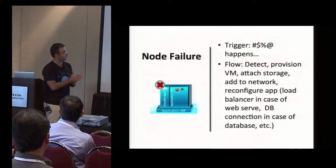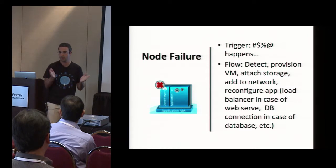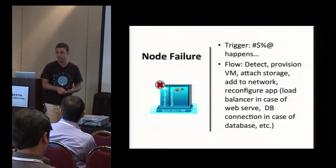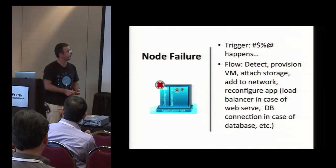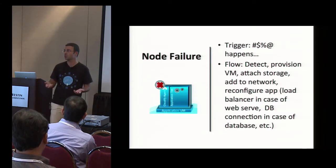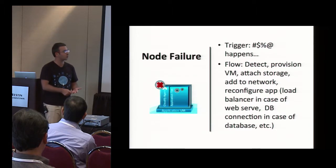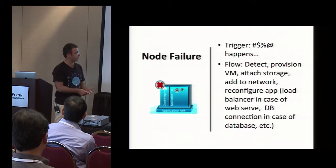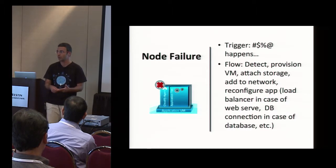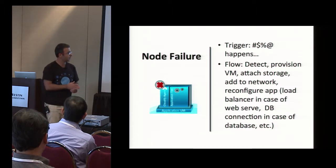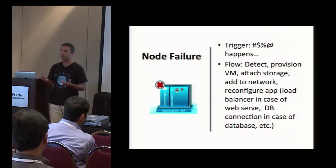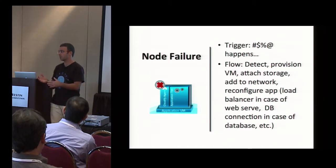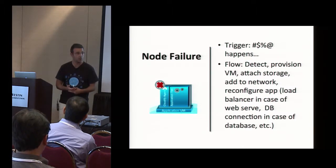The next workflow is node failure, which tends to happen especially in large deployments. You need to first detect it, typically using your monitoring systems, then provision new resources in place of the failed ones, attach storage and networks, and reconfigure your application. For example, if a web server fails and restarts, you need to reattach it to the load balancer. If a MySQL master fails, you fail over to the secondary node and notify all related components about the new master so the application keeps functioning correctly.